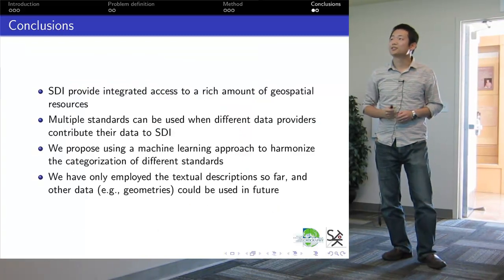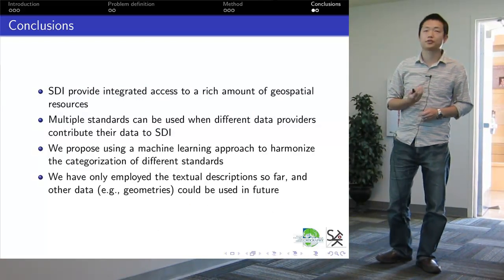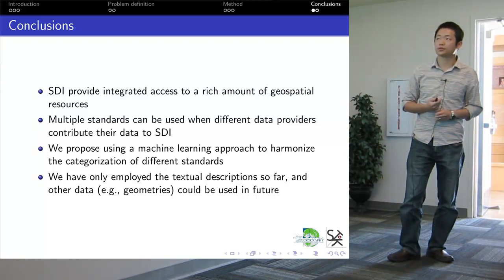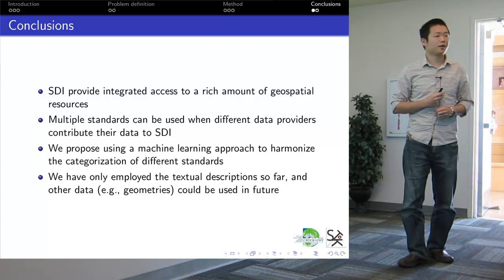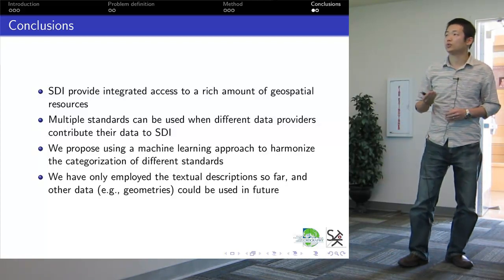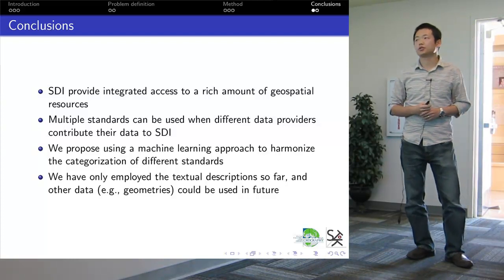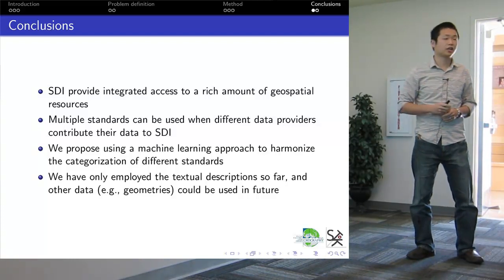Here is the conclusion. Spatial data infrastructures provide integrated access to a rich amount of geospatial resources. Multiple metadata standards can be used when different data providers contribute their data. We propose using a machine learning approach to automatically harmonize the categorization.